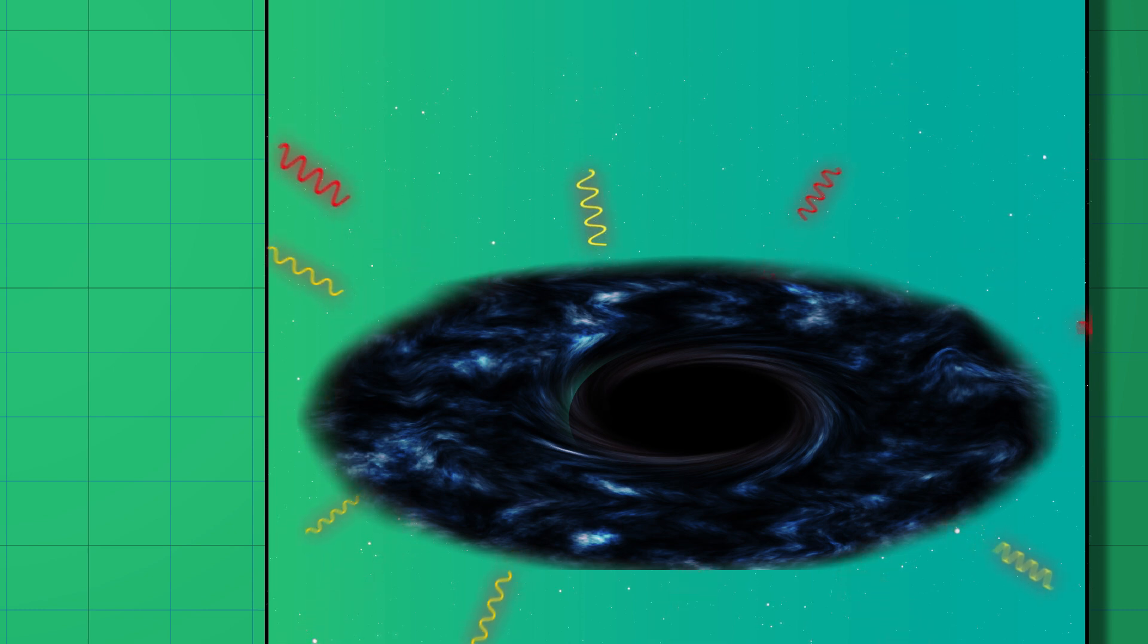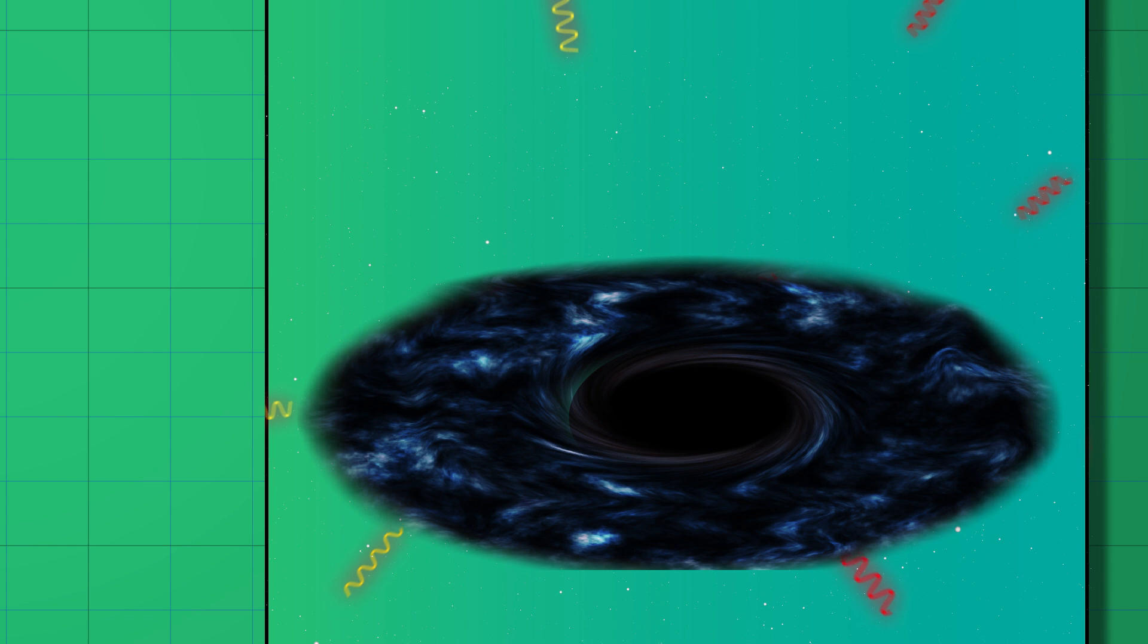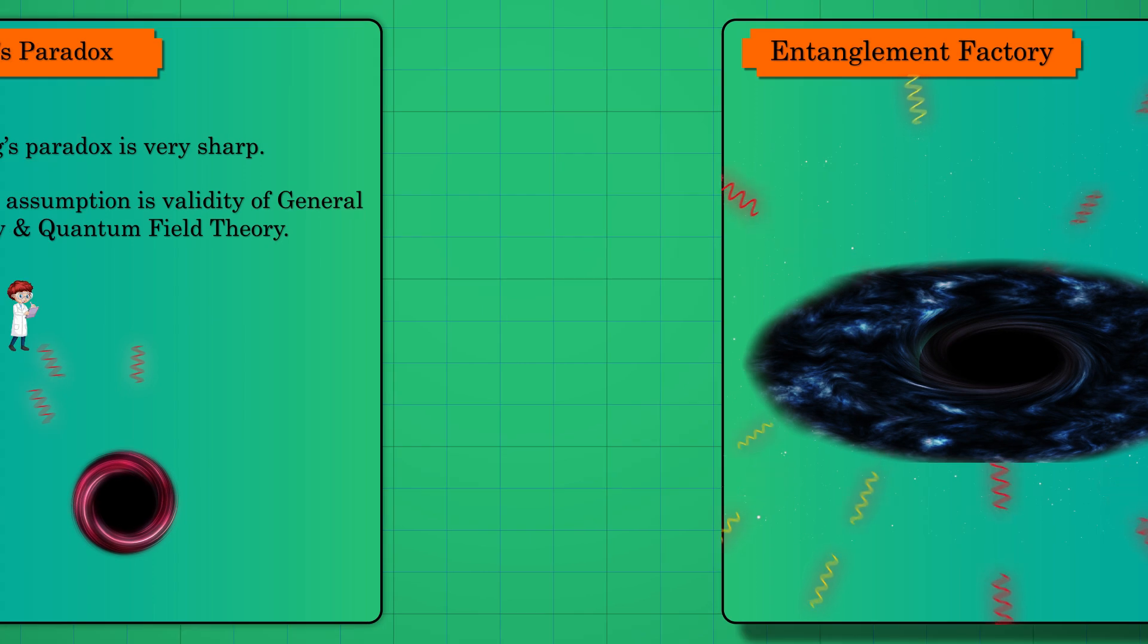Only part of the total entanglement remains when the black hole completely evaporates. Quantum mechanics says this is impossible—you cannot get half entanglement from the total entanglement.